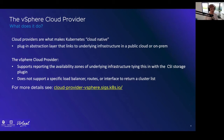There are a bunch of primitives supported by the Kubernetes cloud provider spec that we don't support out of the box with the vSphere cloud provider — things like load balancers and routes — because we have a separate CNI that handles that. If you want more details, check out the cloud-provider-vSphere SIG site.